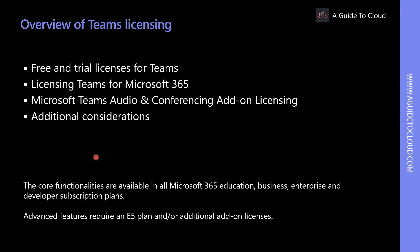There are two main differentiations when choosing the desired license. The core functionalities are available in all Office 365 education, business, enterprise, and developer subscription plans. Advanced features require an E5 plan and additional add-on licenses.